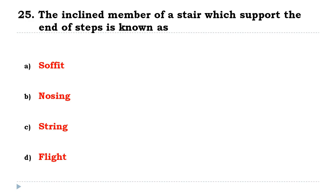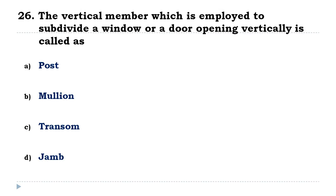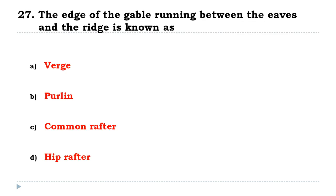The inclined member of a stair which supports the end of the step is known as the string. The vertical member which is employed to subdivide a window or a door opening vertically is called a mullion.